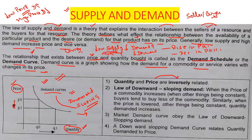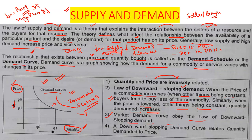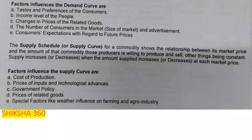The law of demand: when the price of a commodity increases and other things remain constant, buyers tend to buy less of that commodity because they don't want to pay more money. Similarly, when the price is lowered and other things remain constant, quantity demanded increases. Market demand obeys the law of downward sloping demand, which relates quantity demanded to price.